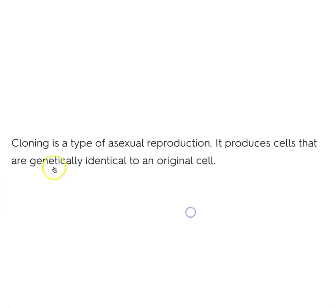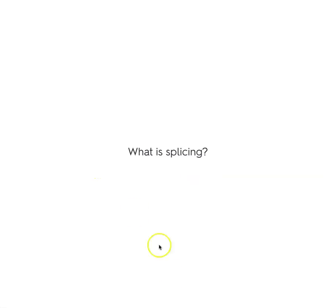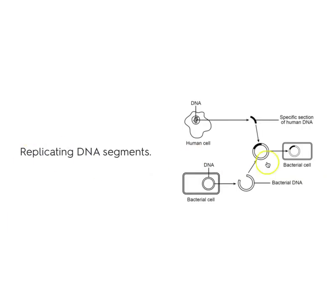What is cloning? Cloning is a type of asexual reproduction — it produces cells that are genetically identical to the original cell. What is splicing? It's taking a segment of DNA and planting it in a bacteria cell so that you can make a specific chemical, for example insulin or penicillin.